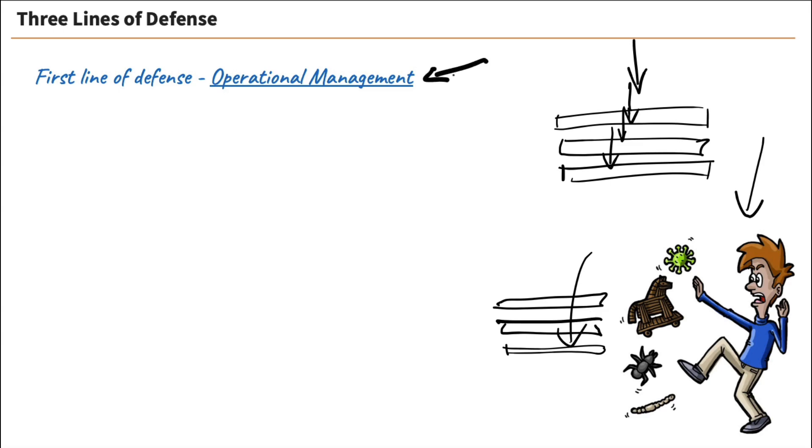Therefore, let's take a look at the first line of defense. The first line of defense is operational management. This is our business unit managers and the employees that they manage. So that is our first line of defense. What are they expected to do? Number one: